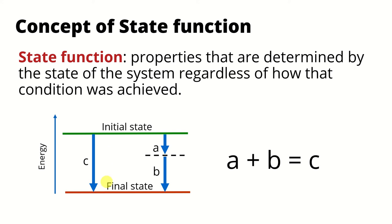As shown in this diagram, changing from initial state to final state can occur in two ways. The first path occurs in a single step, with energy change identified as C. The second path occurs in two steps: A first, then continuing with B. Because we look at the same initial and final states, the total energy A plus B must equal energy C.